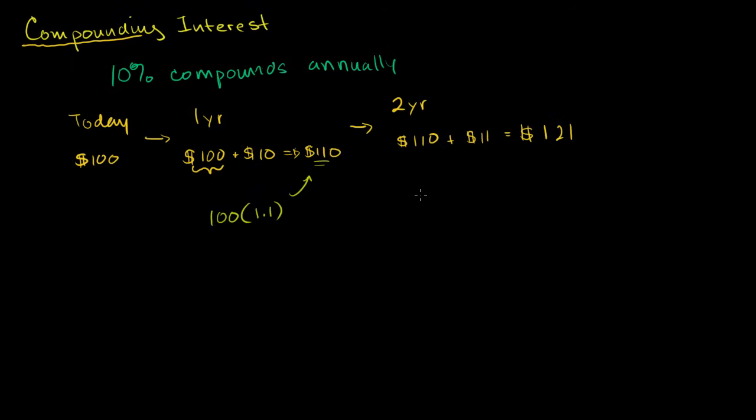Now this number right here is going to be this 110 times 1.1 again. So it's the 100 times 1.1, which was this number right there. And now we're going to multiply that times 1.1 again. And remember, where does the 1.1 come from? 1.1 is the same thing as 100% plus another 10%. That's what we're getting. We have 100% of our original deposit plus another 10%. So we're multiplying by 1.1.